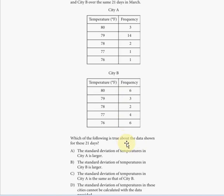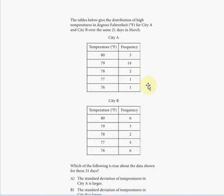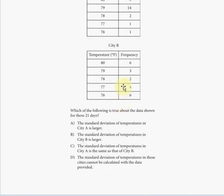Let's calculate the mean temperature value for city B using the same method. We're going to have 80 times 6 plus 79 times 3 plus 78 times 2 plus 77 times 4 and 76 times 6. We're going to add that up and divide by the total number of days in March, which is 21, the same thing, because it says over the same 21 days in March for both cities. You have to divide it by 21.